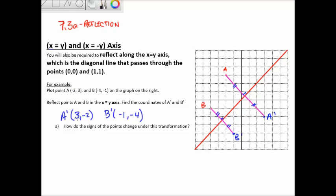Comparing: A was at negative 2, 3 and becomes 3, negative 2. B was at negative 4, negative 1 and becomes negative 1, negative 4. The signs stay the same but the coordinates change places. So for any (x, y) reflected across the x equals y axis, the y coordinate becomes the x coordinate and the x coordinate becomes the y coordinate — they just switch places. This applies along the diagonal line through quadrants 1 and 3.